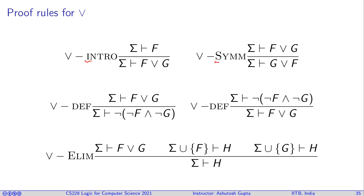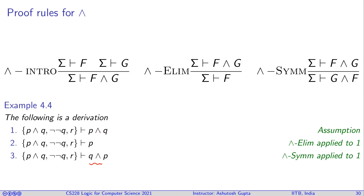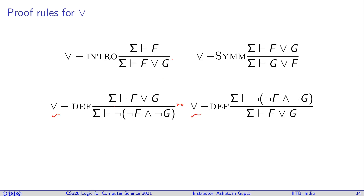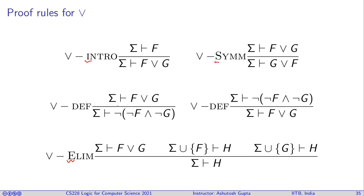A pattern is emerging: for each connective there is an introduction rule, a symmetry rule, and an elimination rule. Conjunction does not have a 'def' rule because conjunction and negation are considered the base symbols — disjunction and others are defined in terms of those two. You can choose any minimal set of symbols as base symbols; different choices yield different proof systems, as seen in other textbooks. This allows us to introduce disjunction in terms of conjunction and negation.